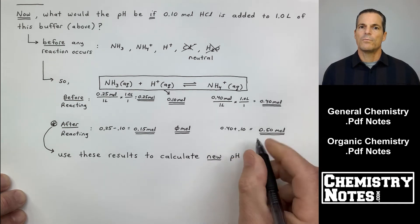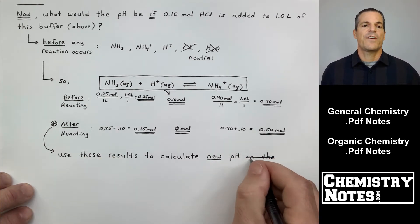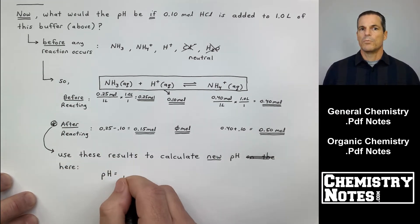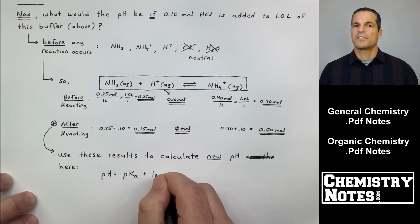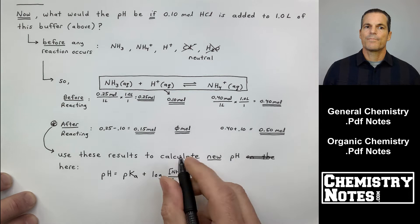And no longer do I have 0.40 moles of NH4 plus. I've got more. I've got 0.50 moles. And that has to do with the stoichiometry here and the fact that it's 0.10 moles of H plus that's reacting. So that's how much is removed from NH3, how much is added to NH4 plus. The star after reacting.